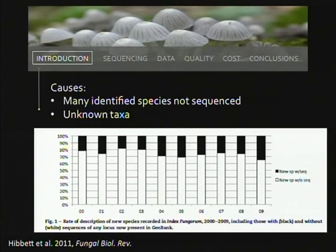One cause is that many identified species haven't been sequenced yet. Also from David's paper, the data show that most taxa described between 2000 and 2009 don't have sequences in GenBank. So there are a lot of things we know about that we don't have sequences for, and a lot of those environmental sequences represent unknown taxa.